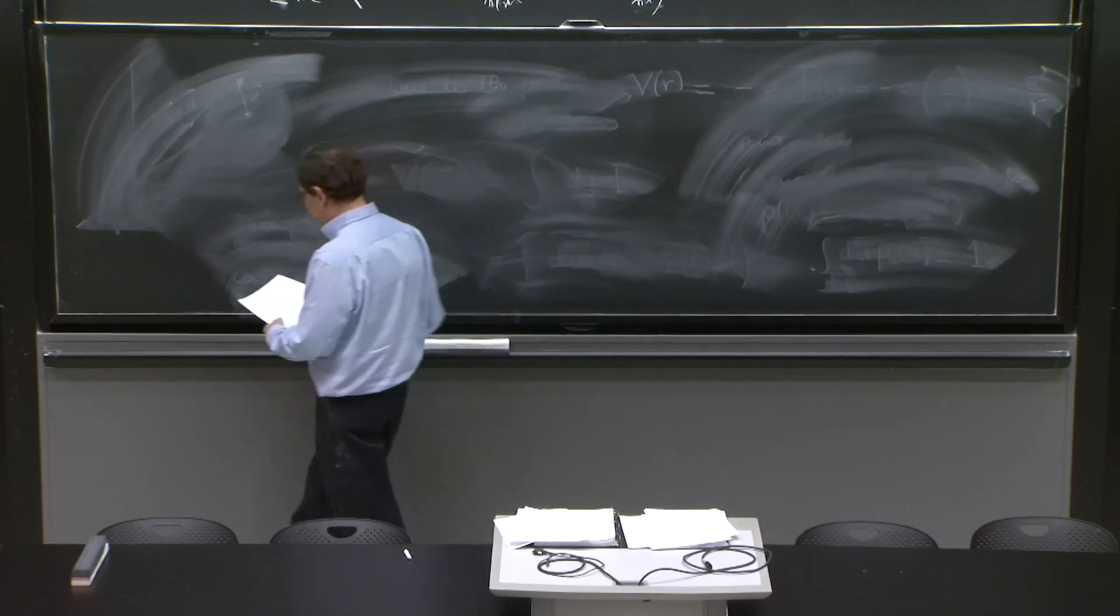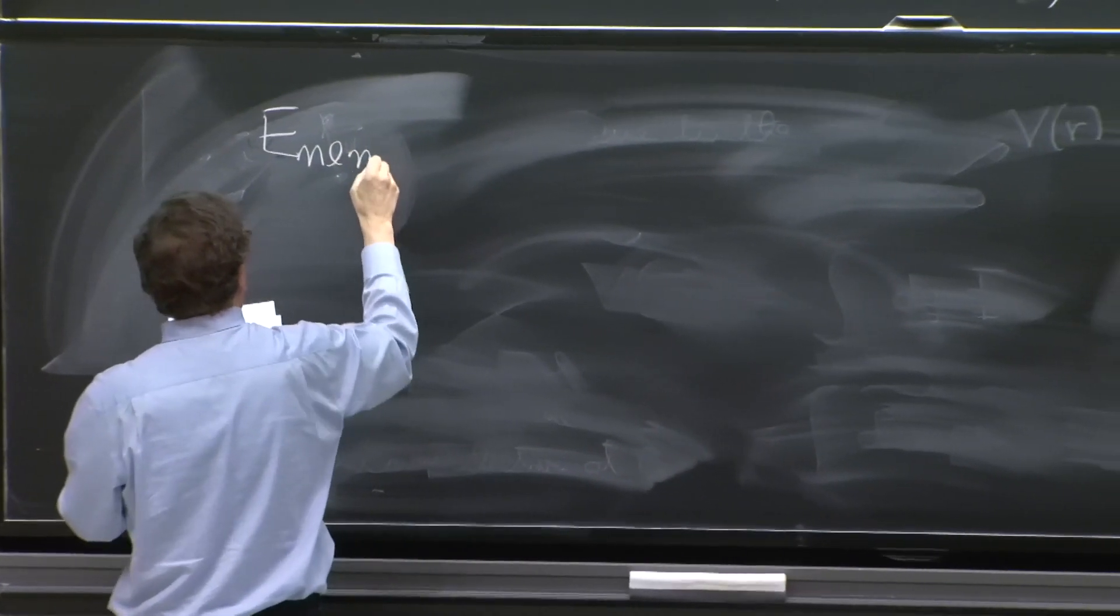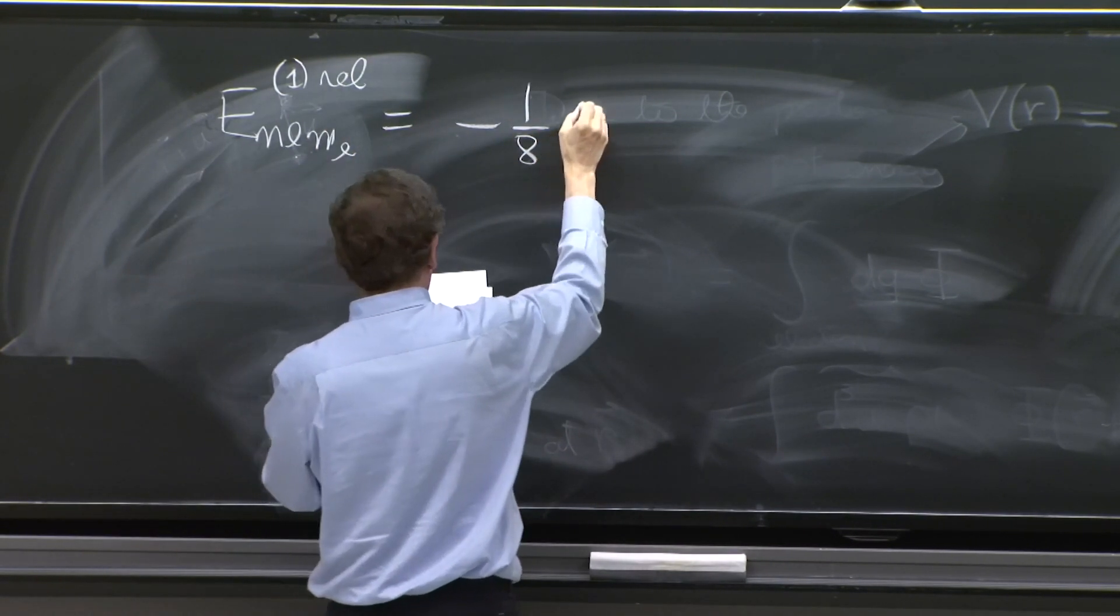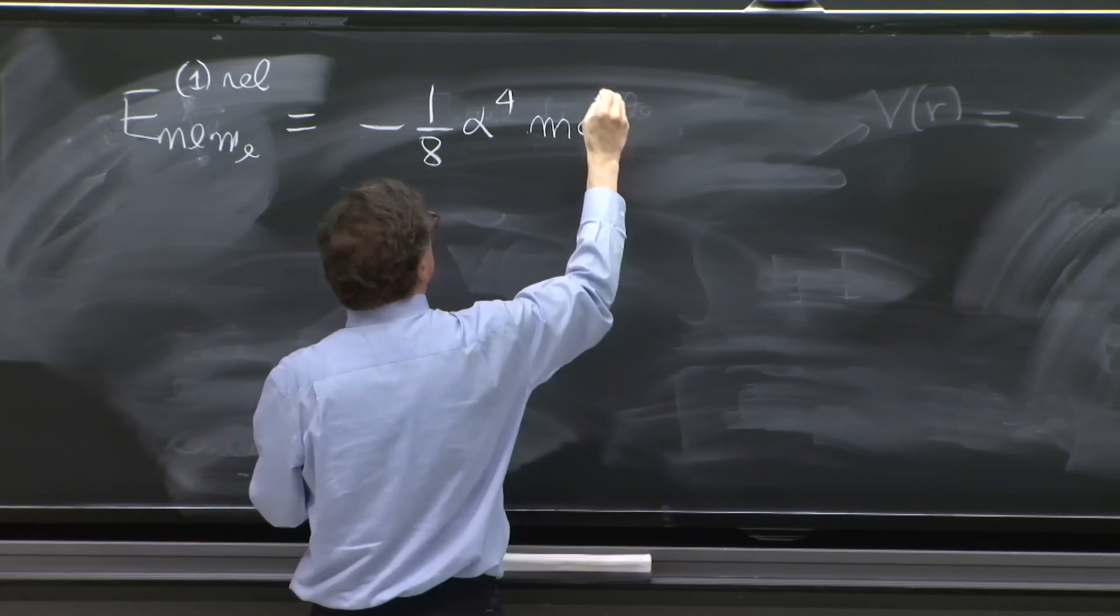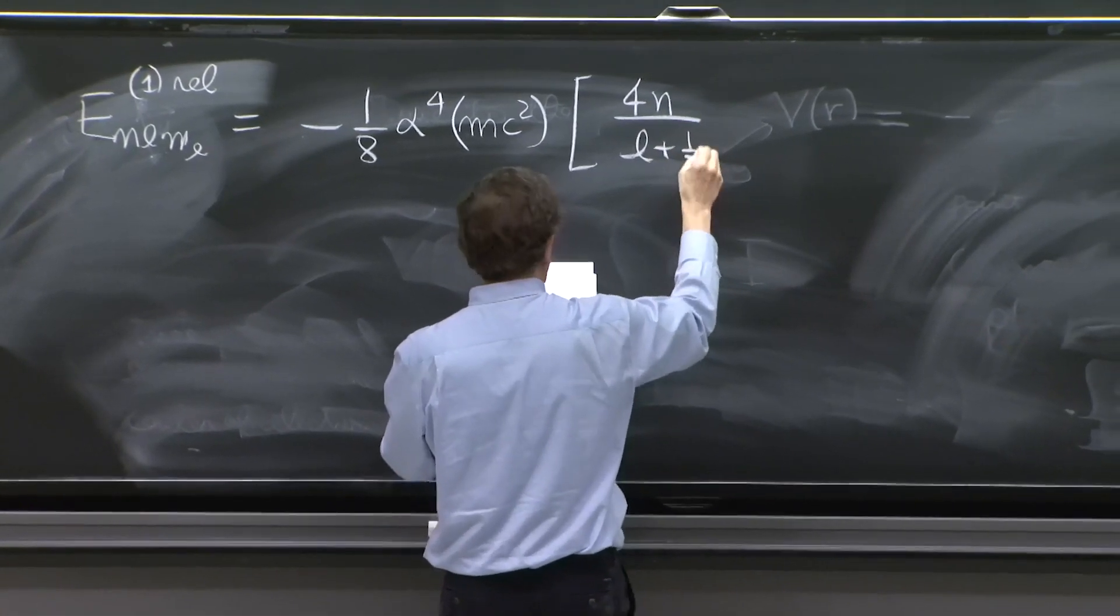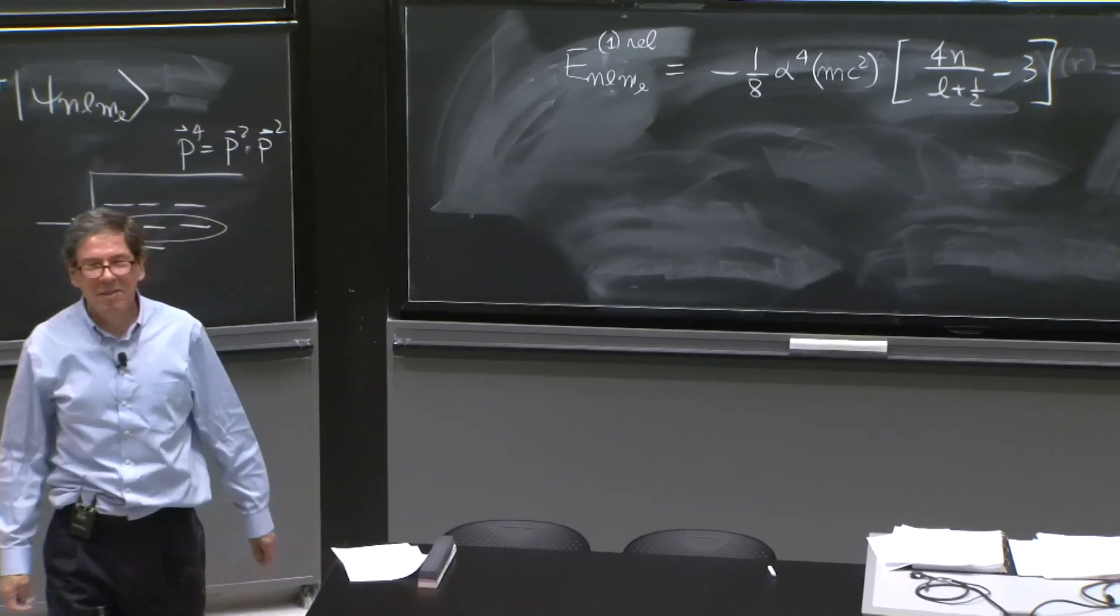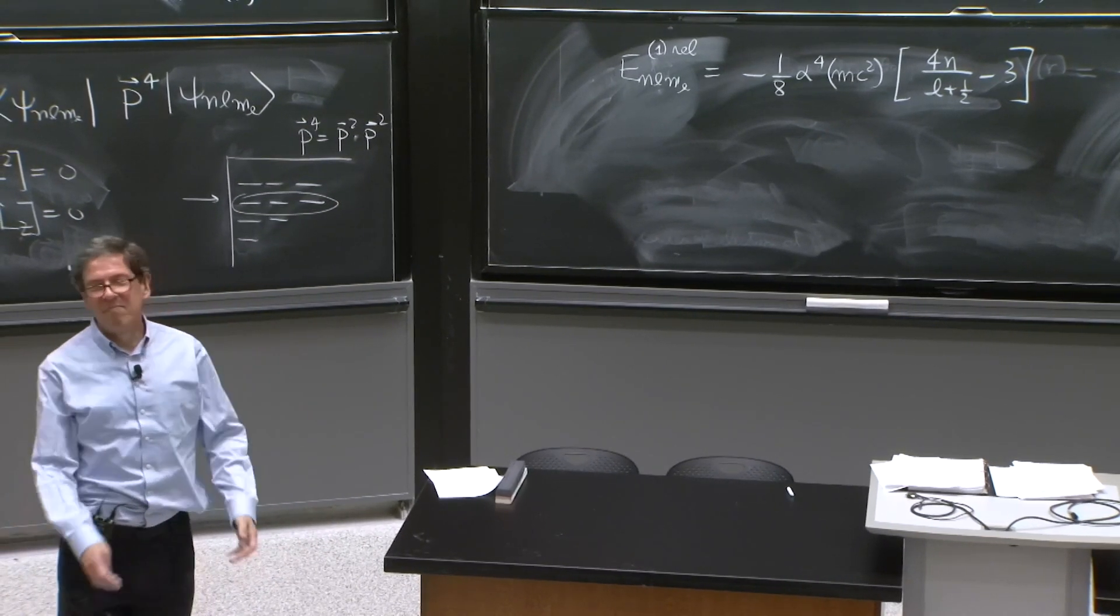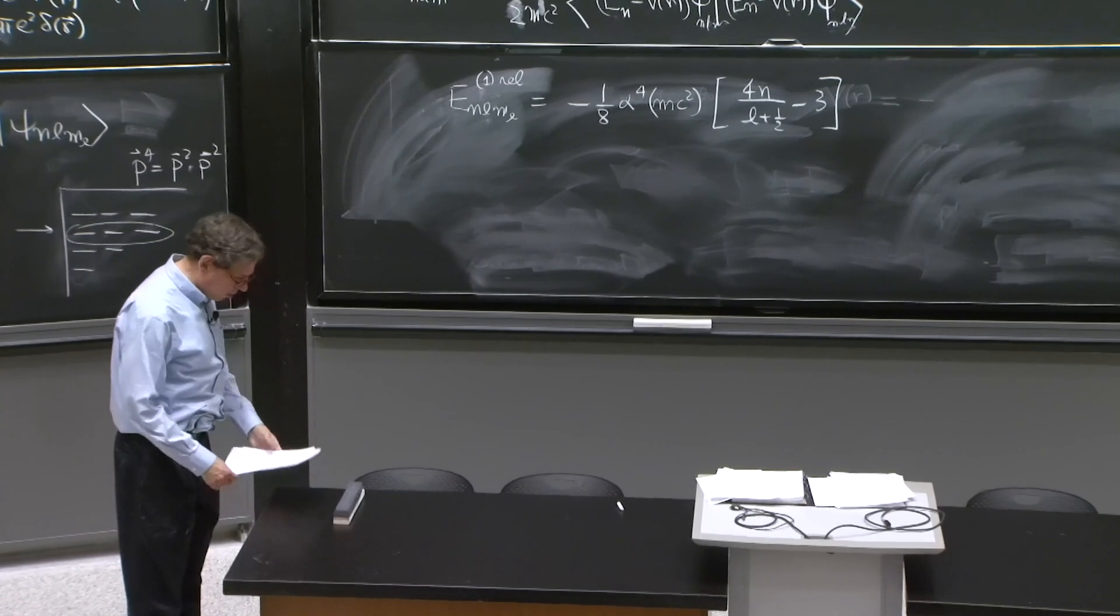So let's write the answer. And the answer is that enlml1 relativistic is minus 1/8 alpha to the fourth, that's our very recognizable factor, mc squared, 4n over l plus 1/2 minus 3. Now, fine structure is something all of us must do at least once in our lives. So I do encourage you to read the notes carefully and just do it. Just become familiar with it. It's a very nice subject. And it's something you should understand.